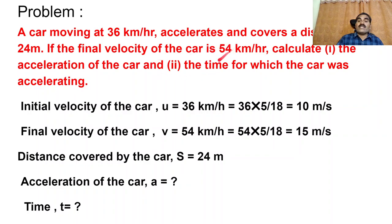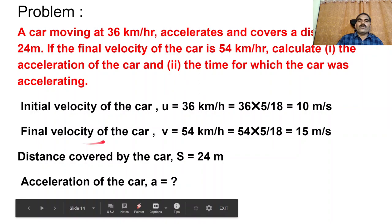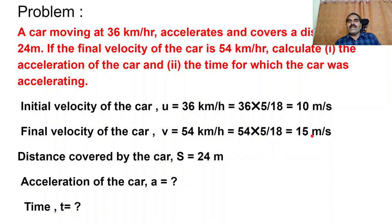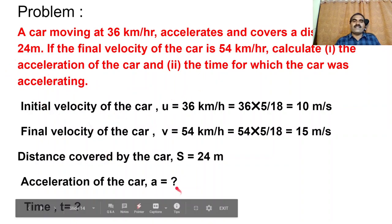The final velocity is also given: 54 km per hour. So final velocity V equals 54 km per hour equals 54 into 5 by 18 equals 15 meters per second. The distance covered by the car is also given: S equals 24 meters.